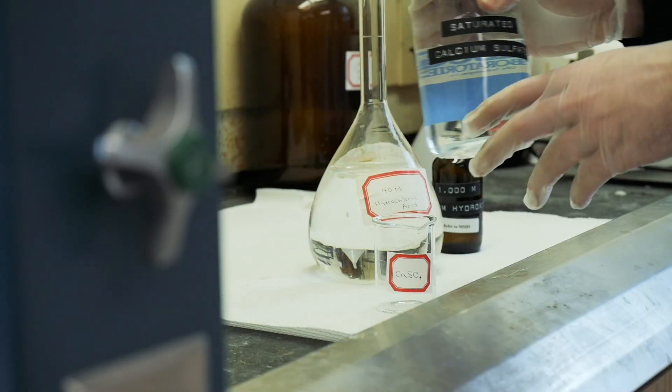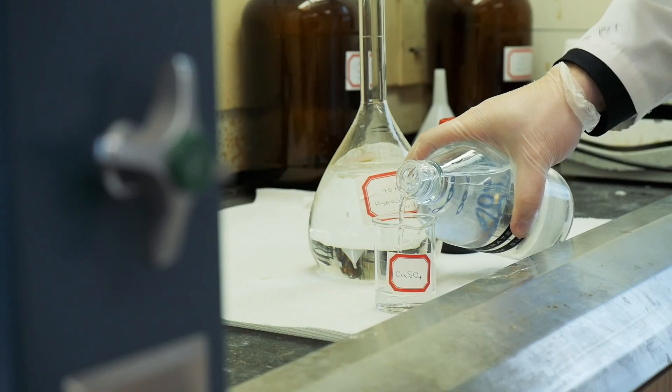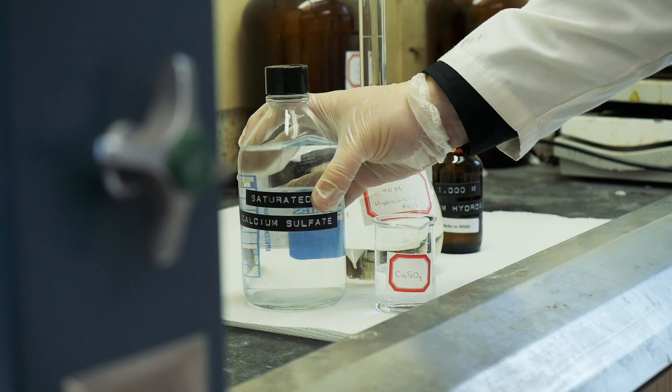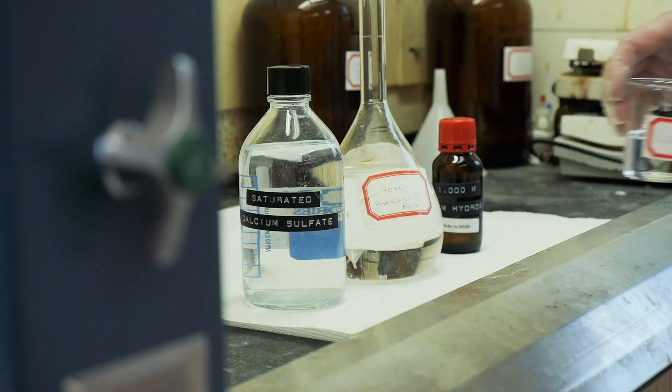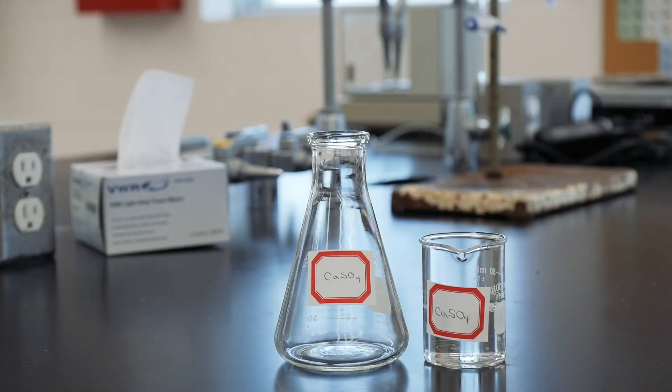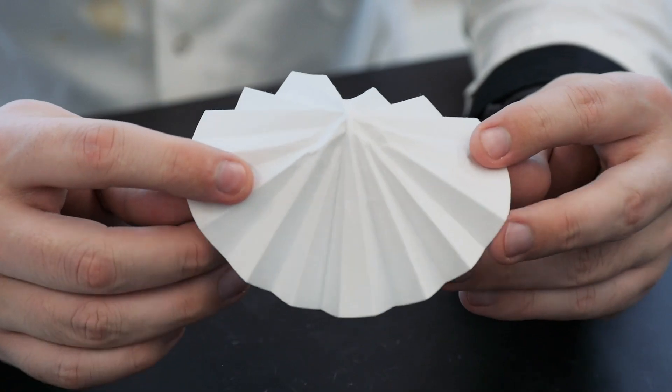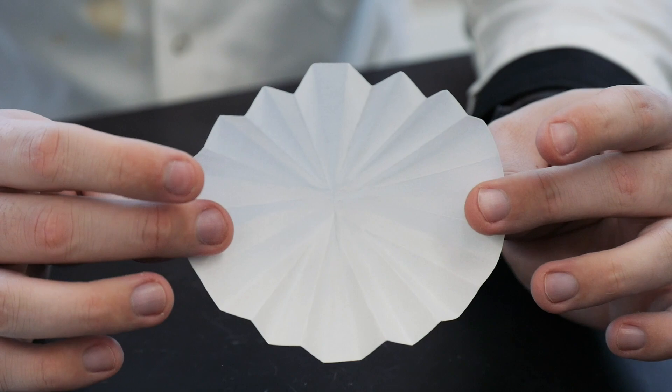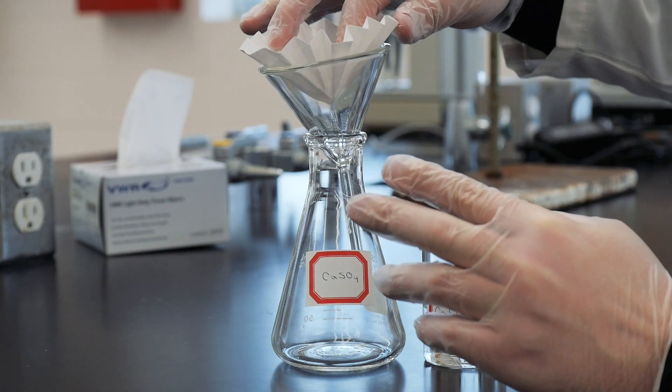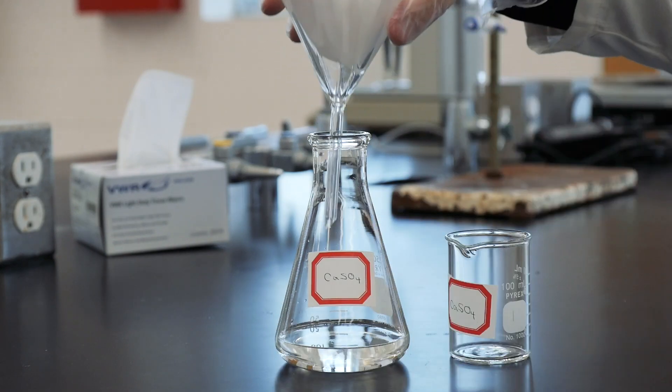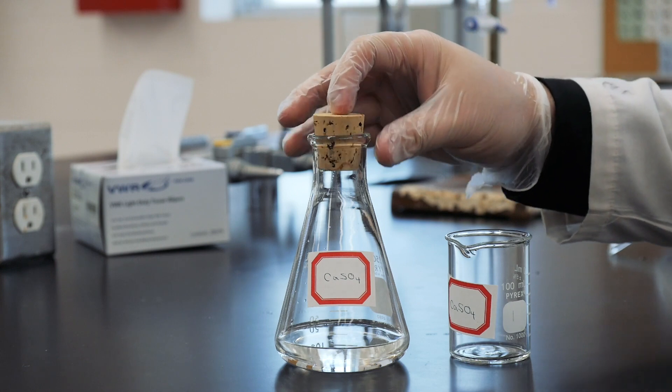A saturated solution of calcium sulfate is available for you in the lab. Collect about 50 mils of it in a clean, dry 100 mil beaker. Then filter the calcium sulfate solution into a 250 mil Erlenmeyer flask using fluted filter paper, which you can make like this. Now just stopper the flask.